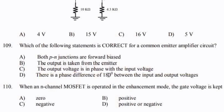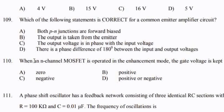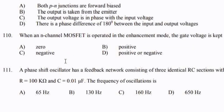When an N-channel MOSFET is operated in the enhancement mode, the gate voltage is kept — option B — positive.